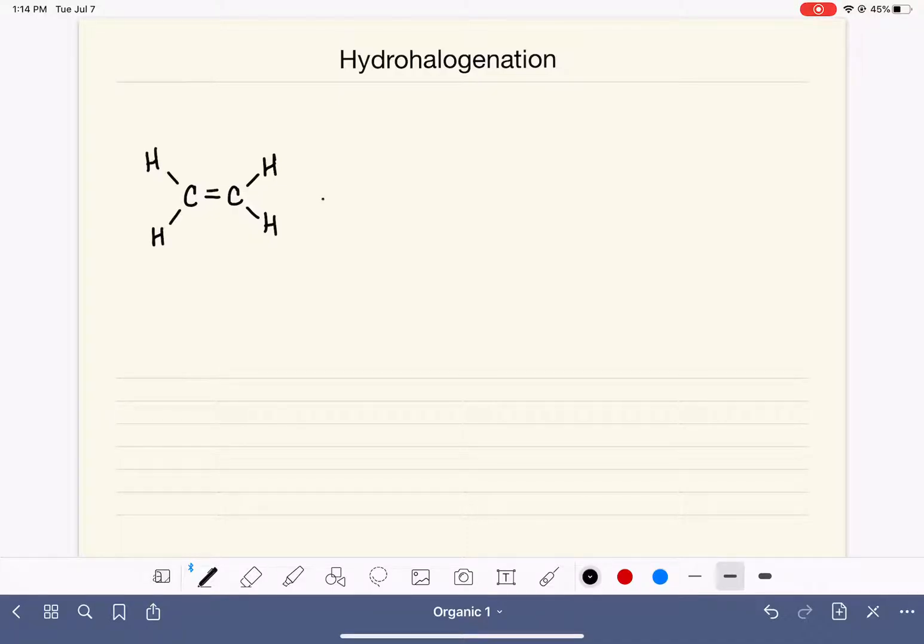We're reacting an alkene with some molecule that has the formula XY. In hydrohalogenation specifically, we are reacting with an HX molecule, where HX can be HCl, it can be HBr, and less commonly, it can be HI.